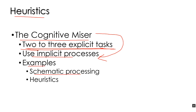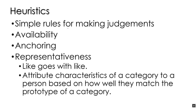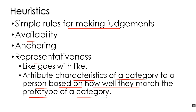A couple examples: one is schematic processing. When people are acting like misers and focusing on important things consciously, they will do things unconsciously or implicitly according to schematic processing, and they're more likely to rely on heuristics. A heuristic is a simple rule for making judgments. The textbook talks about availability and anchoring, and I like to talk about representativeness. The representativeness heuristic is the simple rule that we attribute characteristics of a category to a person based on how well they match the prototype of that category.